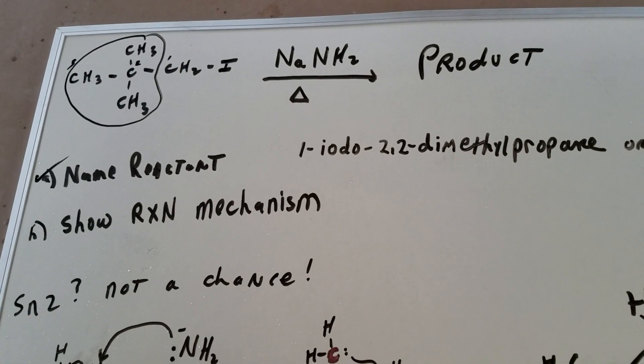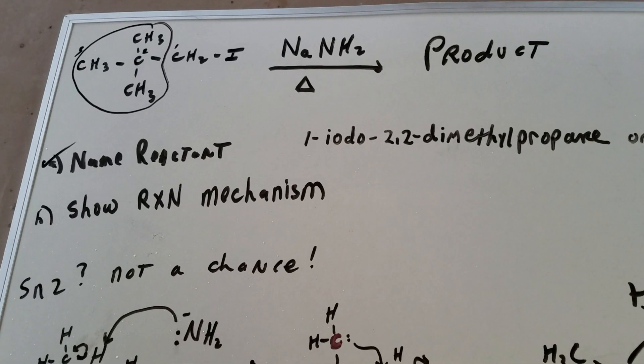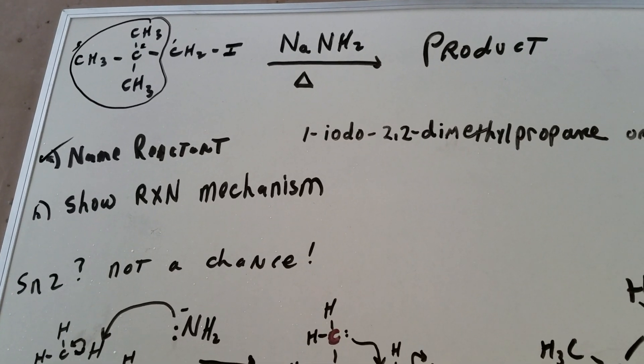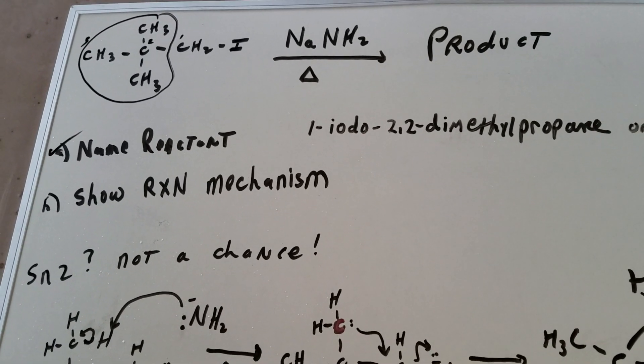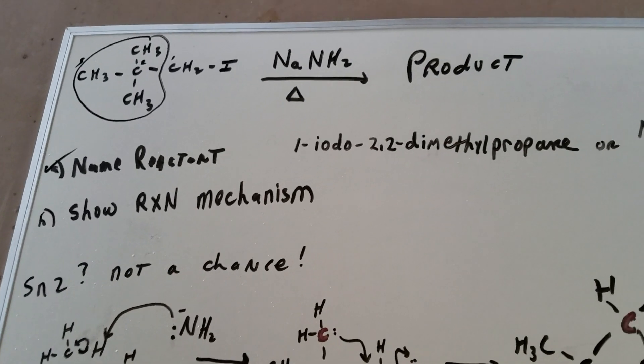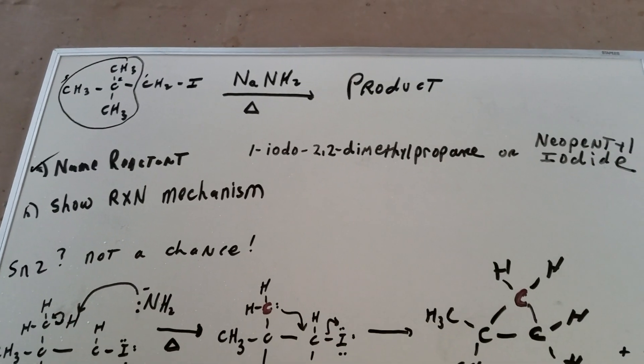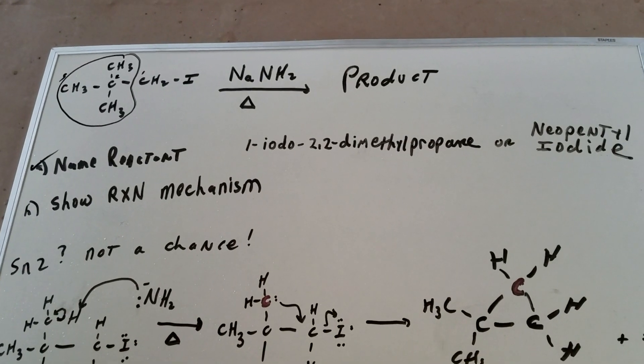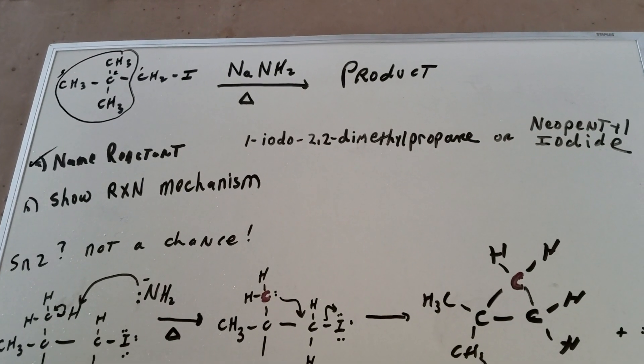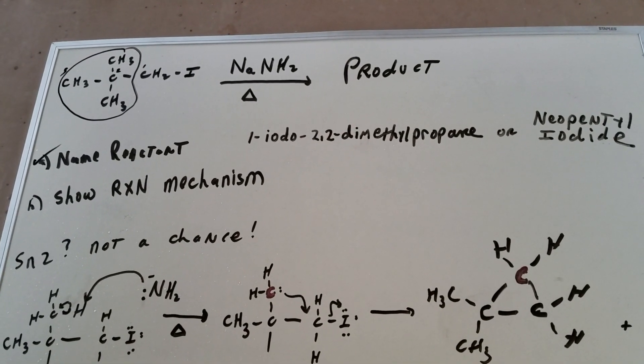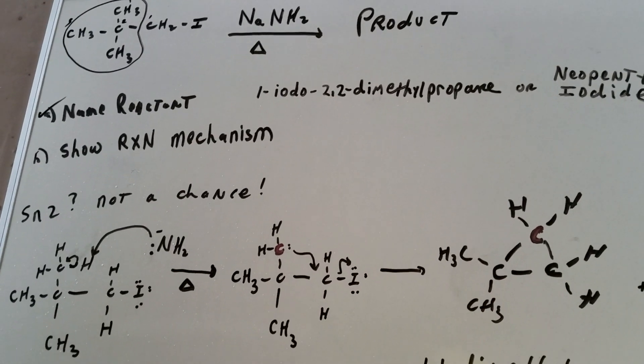If you remember, whenever there's a backside attack, we're attacking the antibonding orbital. There's no way we can get access to that antibonding orbital because of steric hindrance. So that means that instead of entertaining the possibility of the NH2 acting as a nucleophile, could it act as a base? And that's where the key is.